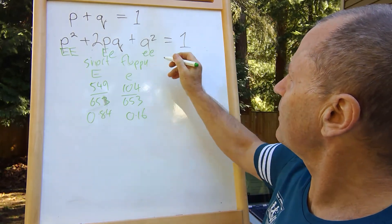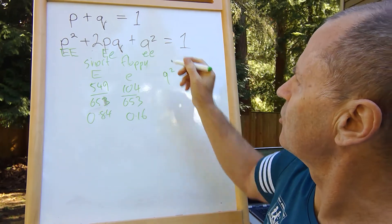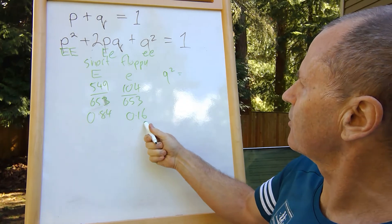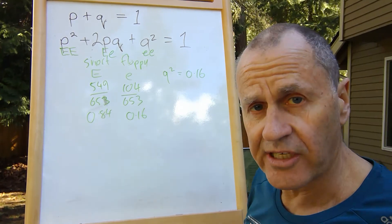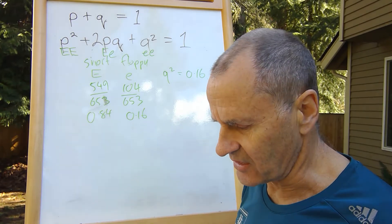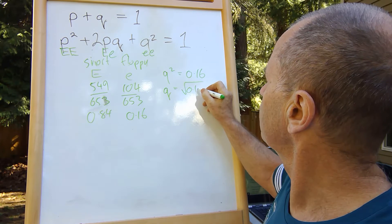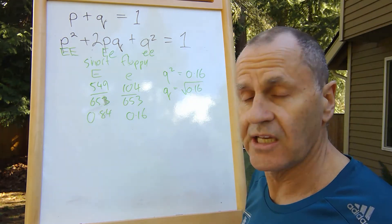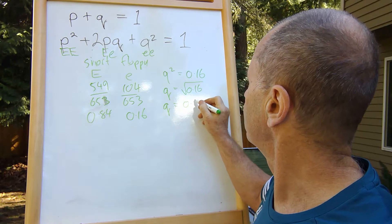Let's have a look at what we can find. We've got the frequency of homozygous recessive, so q² equals 0.16. Therefore q equals the square root of 0.16, and q equals 0.40.